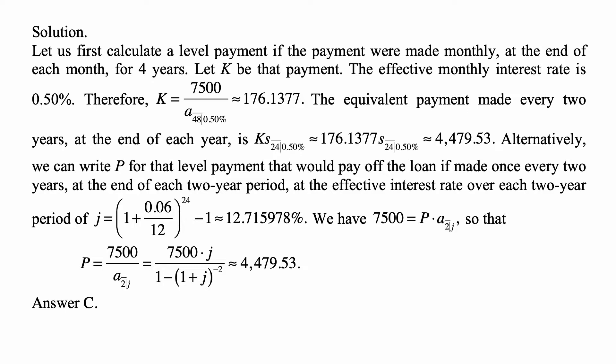We would have to find that rate. Let's write J for it. J would be 1 plus 0.06 divided by 12 to the 24th minus 1, because 1 plus J equals 1 plus 0.06 over 12 to the power of 2 times 12. That's two years, 12 months in a year, and 6% is the nominal annual rate compounded monthly. That's approximately 12.715978 percent.